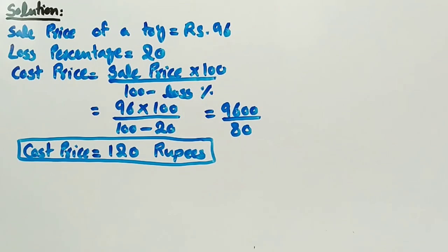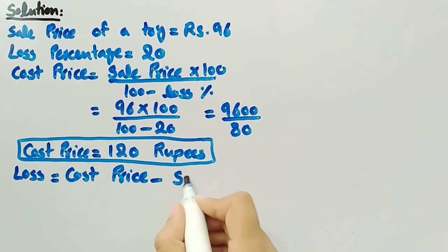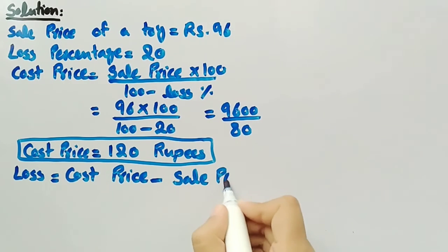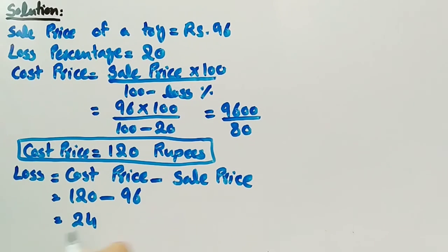Since we have to find loss and loss is equal to cost price minus sale price, cost price is 120 rupees minus sale price is 96 rupees. 120 minus 96 is 24, so loss is equal to 24 rupees.